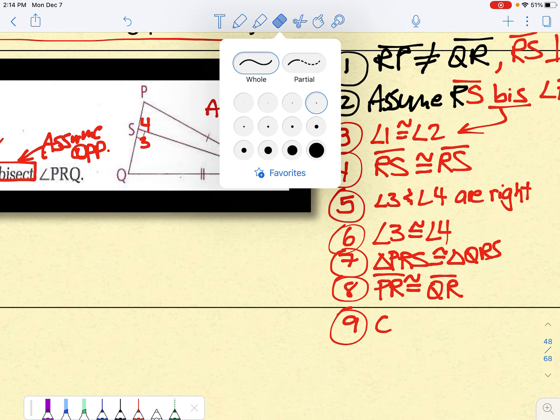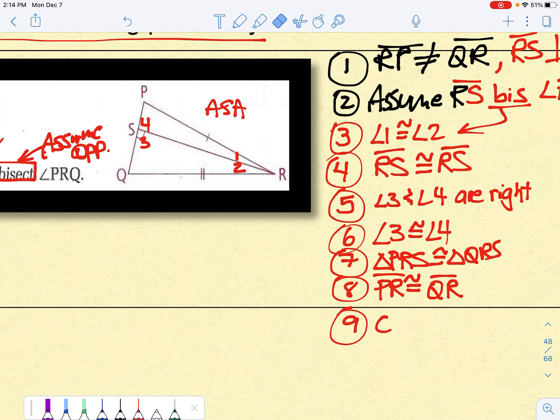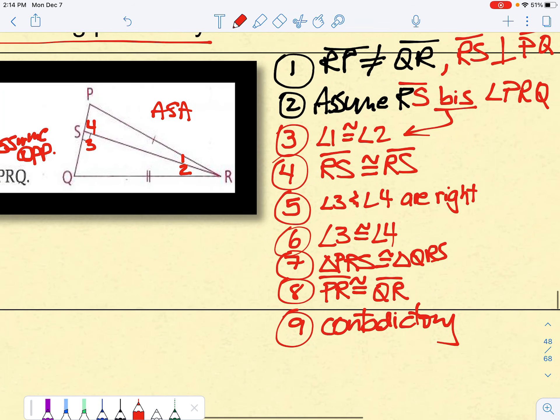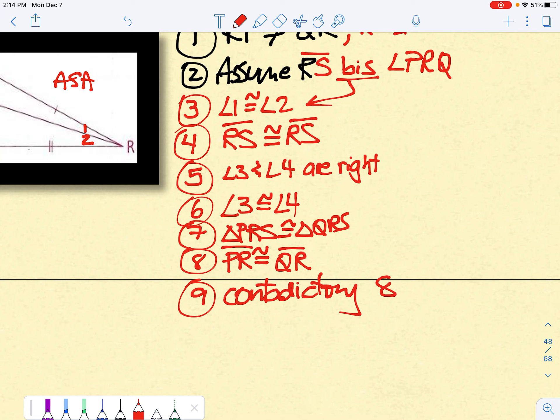Now, typically what we do is we specifically say what line contradicts. Eight and one. Okay, they can't be both congruent and not congruent.